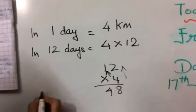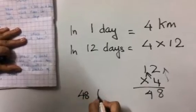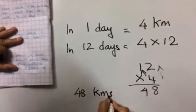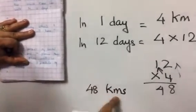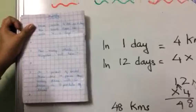Wonderful. So the answer is 48 kilometers. KMS matlab kilometers. Okay. So like this, write down the statement. Isko kya bolte hai? Statements.